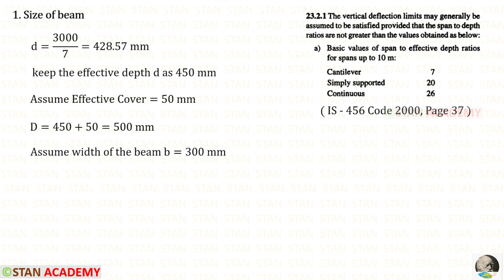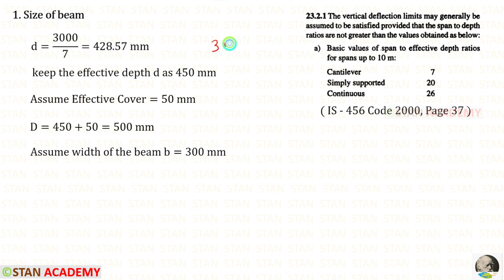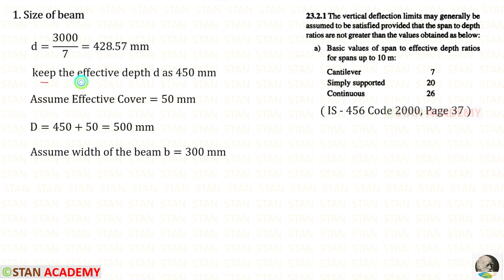First we have to design the size of the beam. From IS 456 code book page number 37, we take the span to effective depth ratio. For a cantilever it is 7. The clear span is 3 meters, which is 3000 millimeters. So 3000 divided by 7 gives 428.57, which we round up to 450 millimeters as the effective depth.